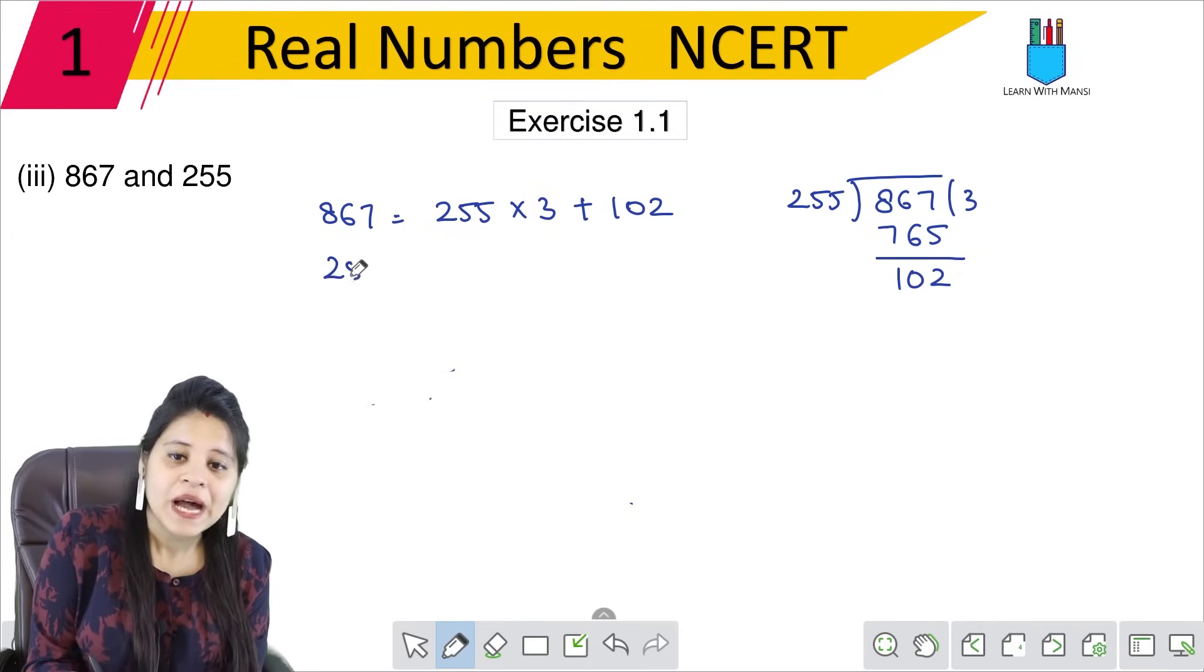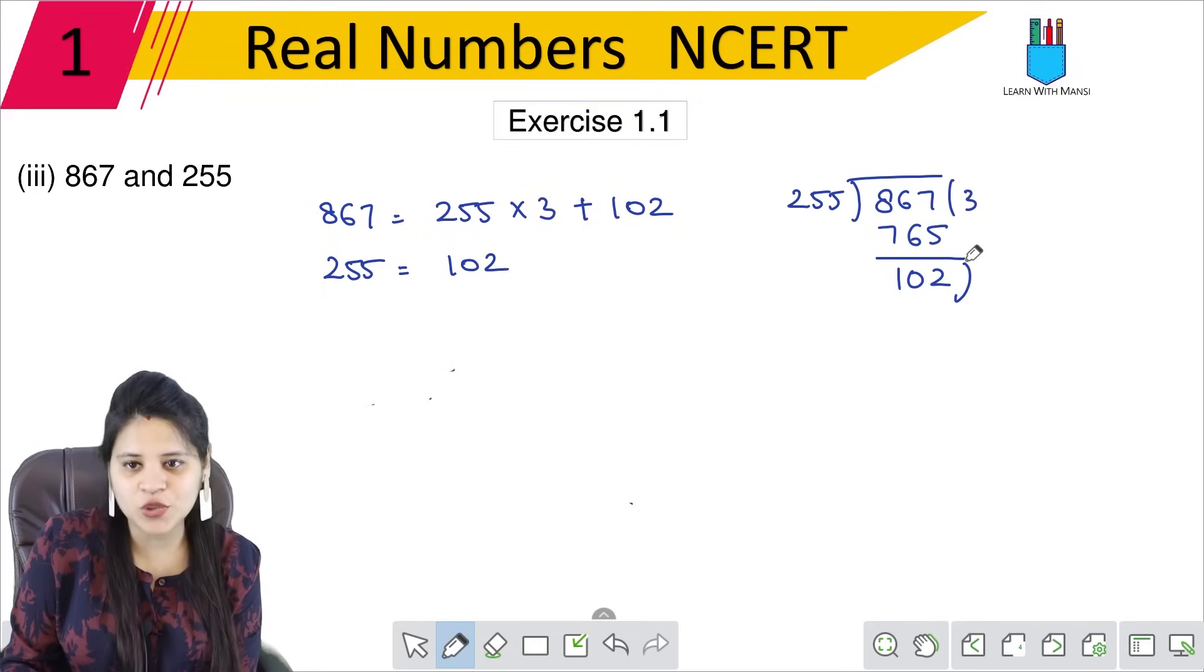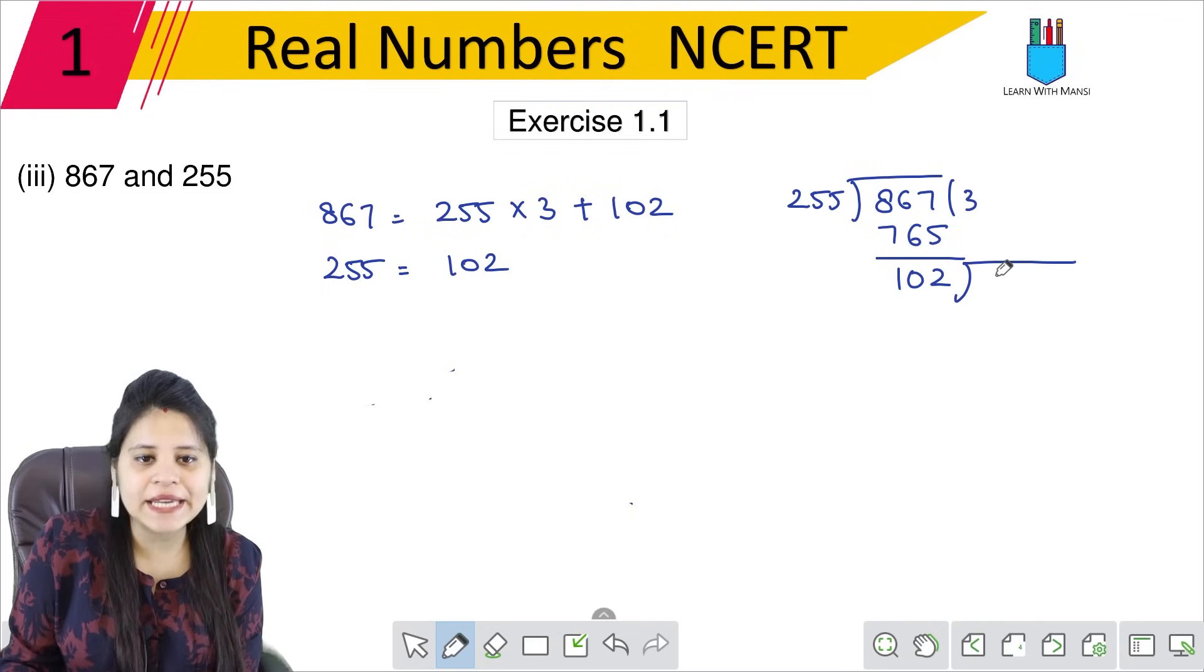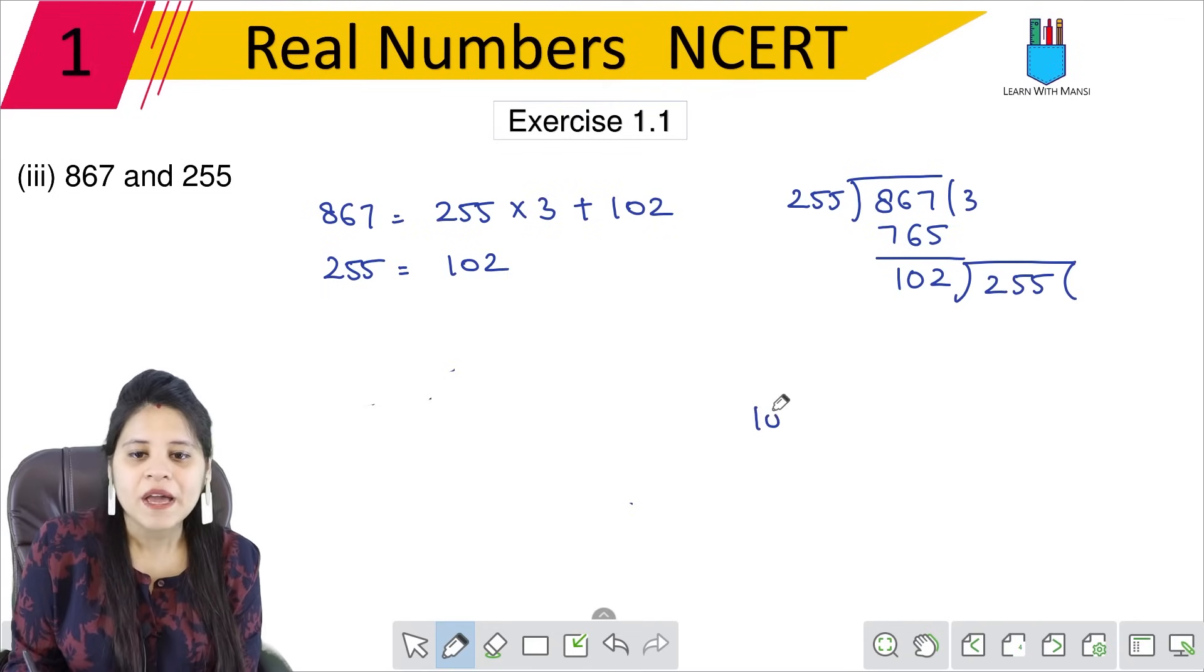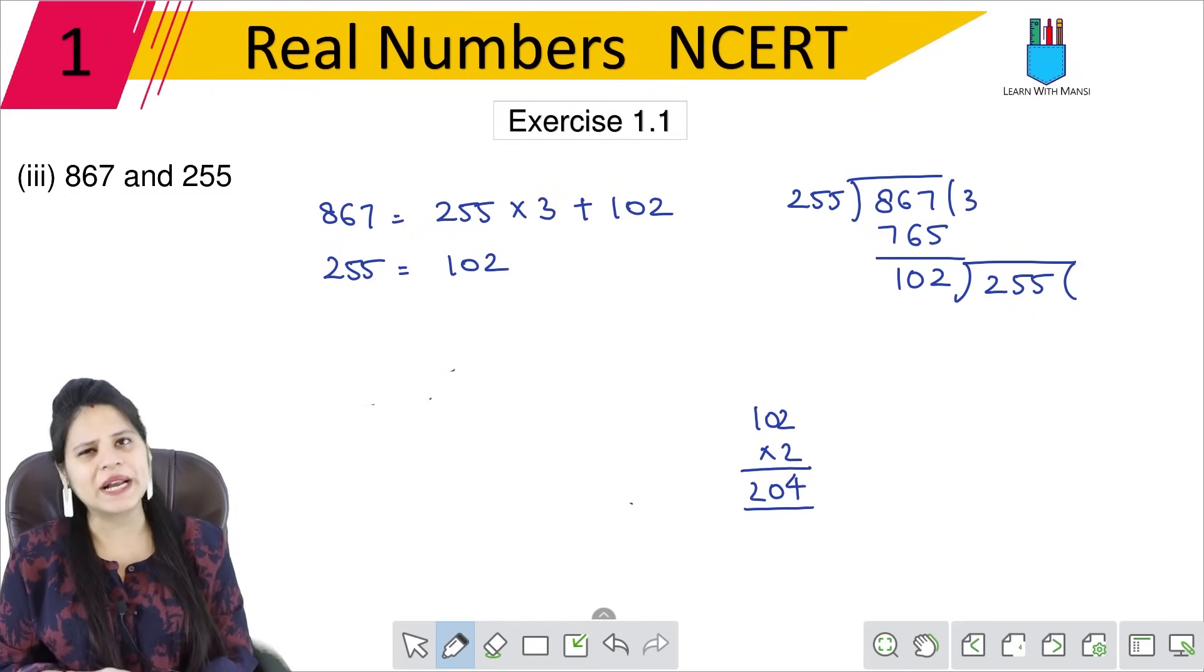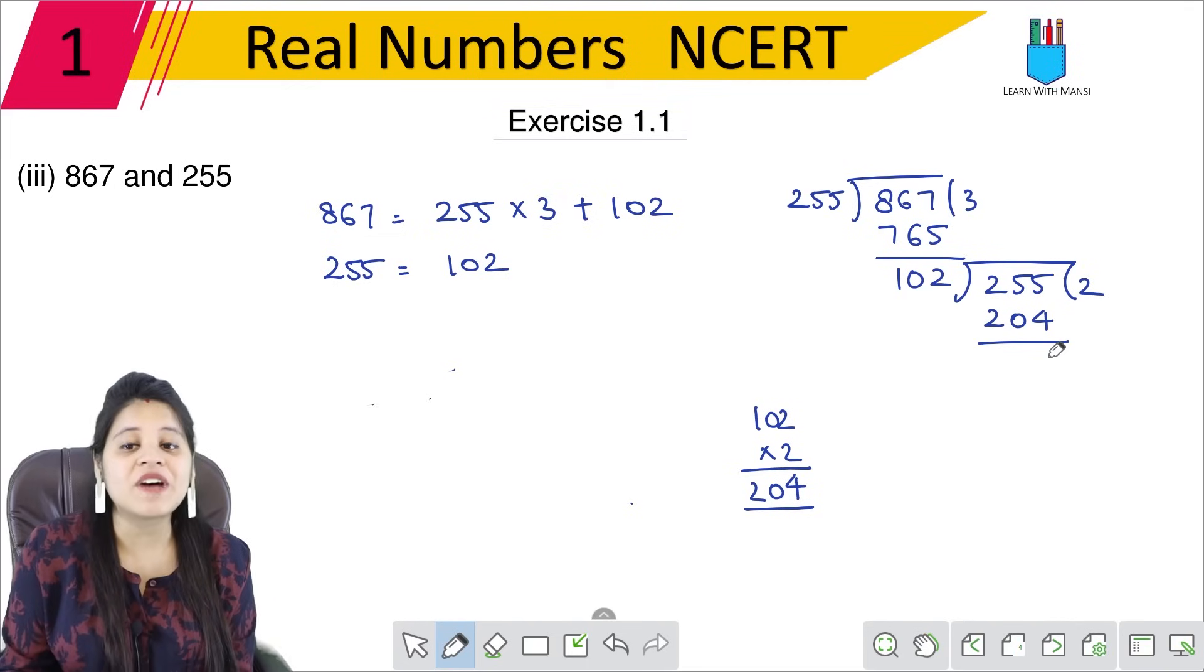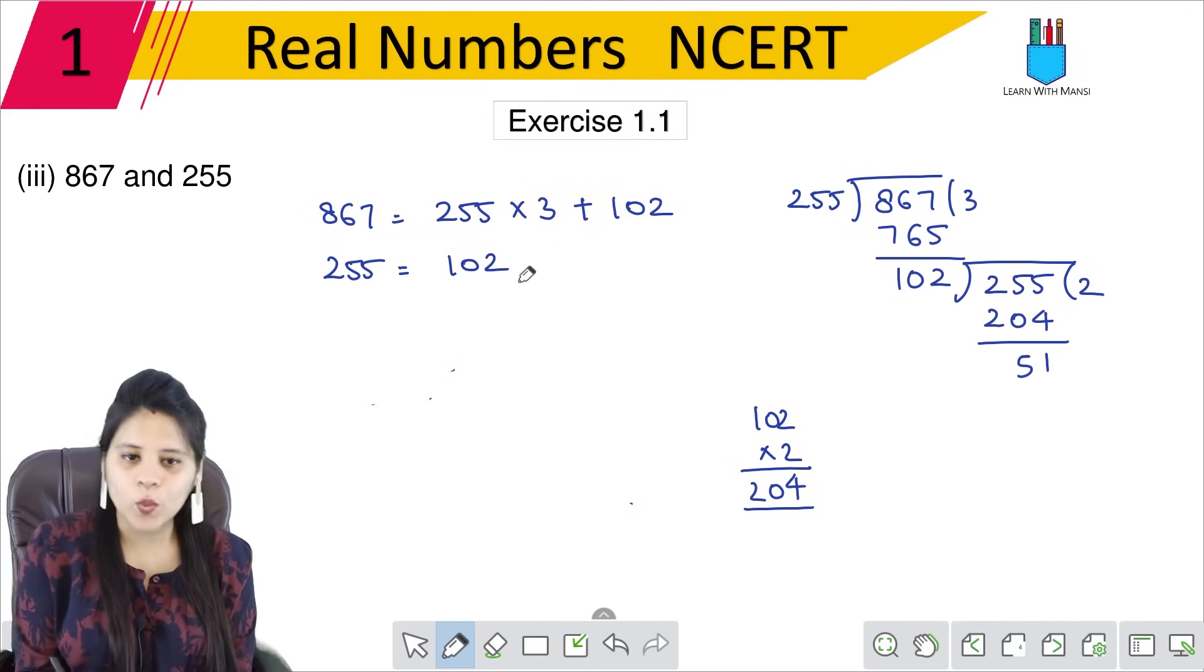Next step, we divide 255 by 102. So 102 into 2 gives 204. The remainder is 51. Therefore, 255 equals 102 multiplied by 2 plus 51.